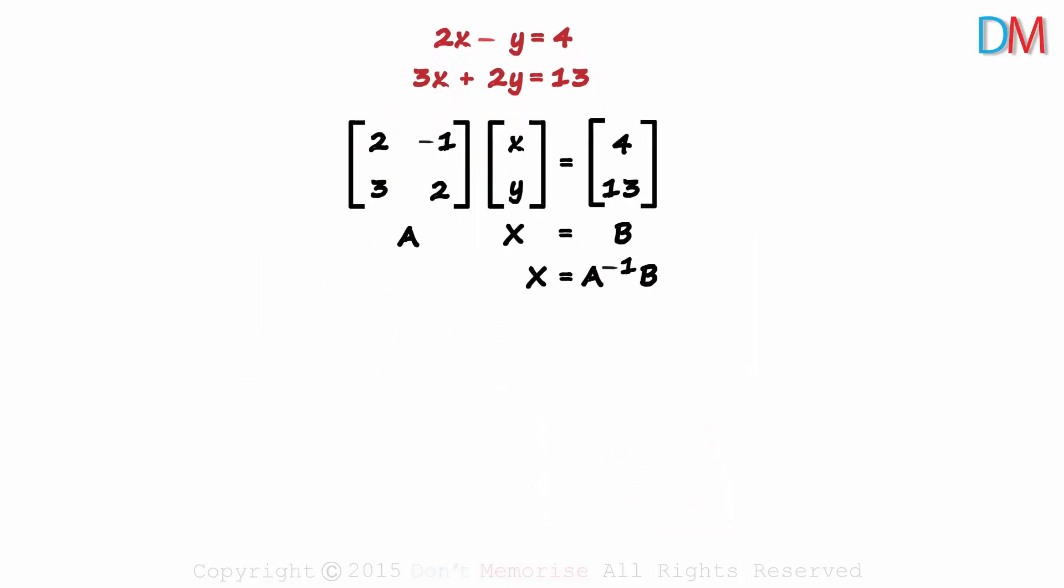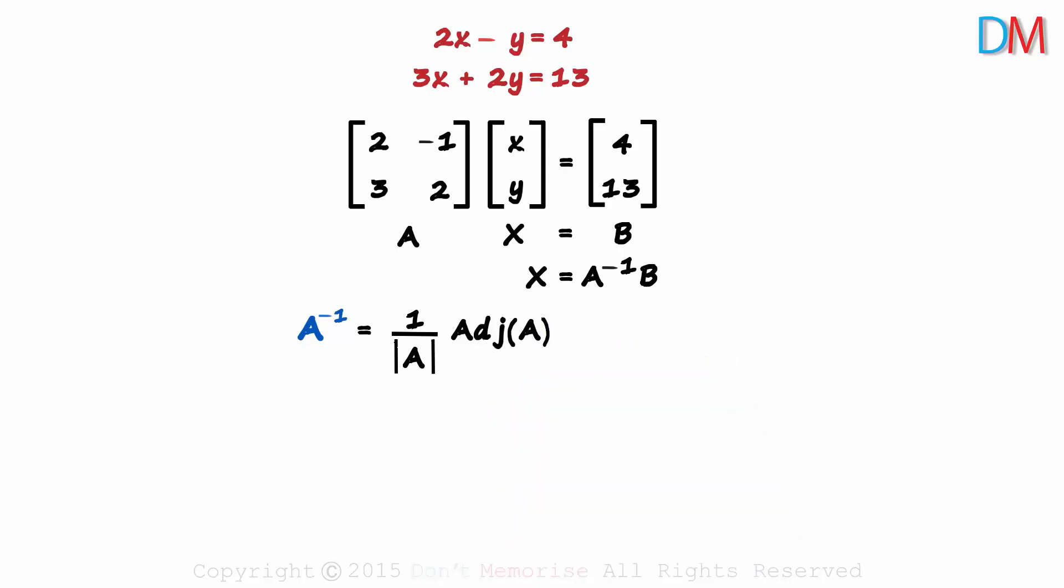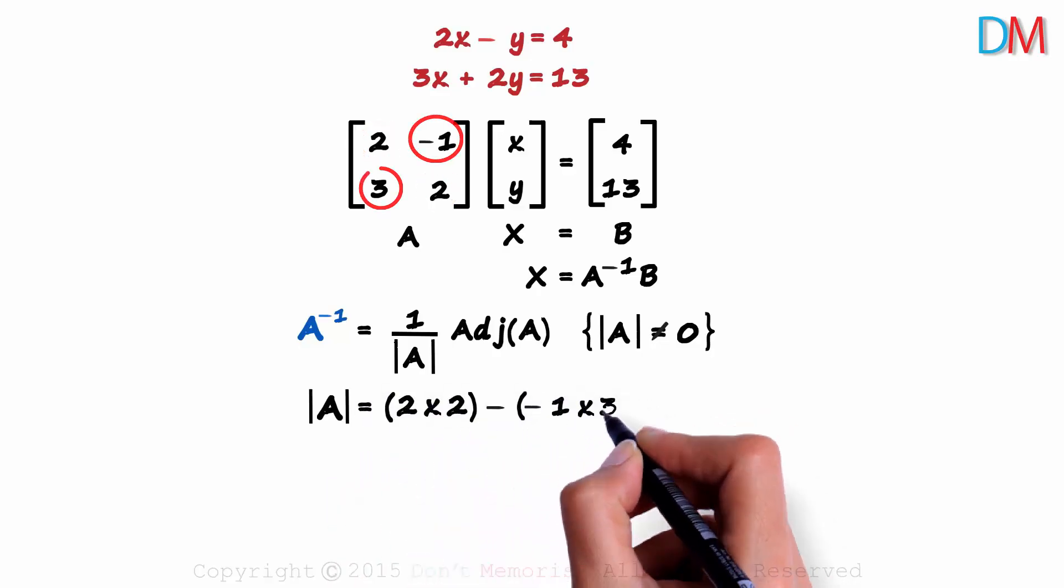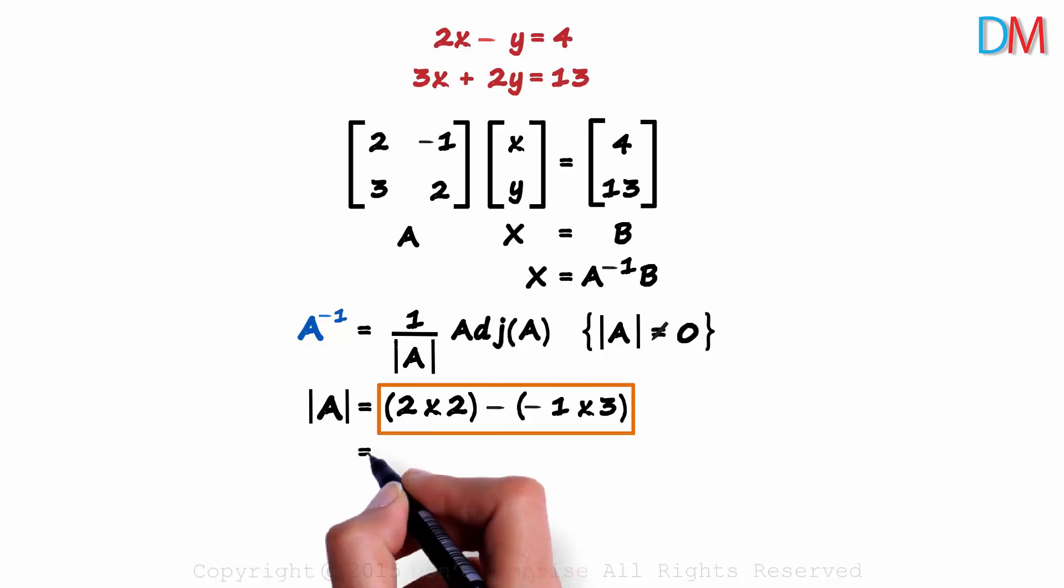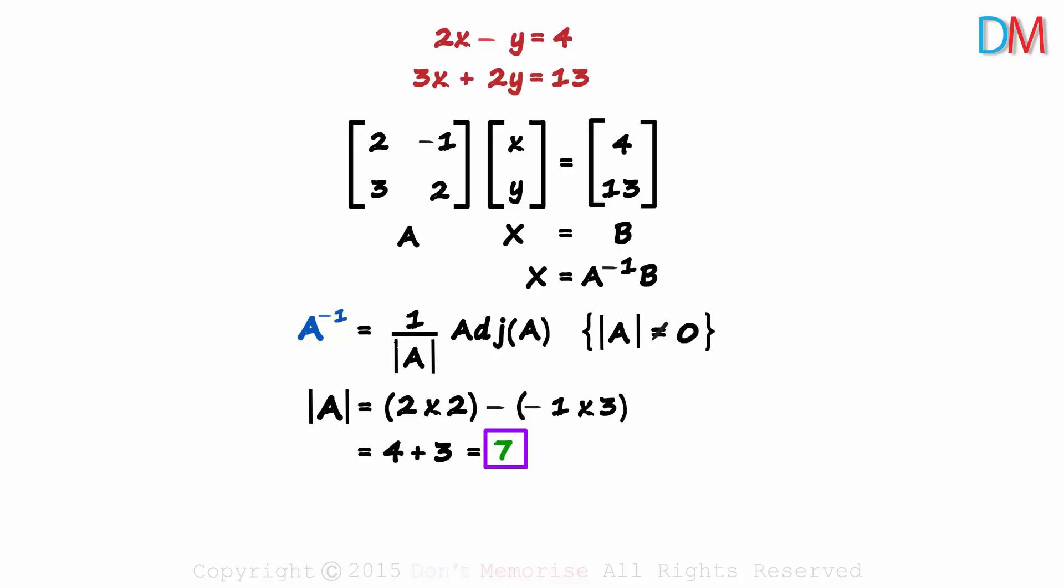Let's zoom out and find the value of A inverse. It will equal 1 over the determinant of A times the adjoint of A. And there was a condition which said that the determinant of A should not be equal to 0. So let's find the determinant of A first. It will equal 2 times 2 minus negative 1 multiplied by 3. That will equal 4 plus 3 which equals 7. As it's non-zero, the inverse of the matrix will exist.